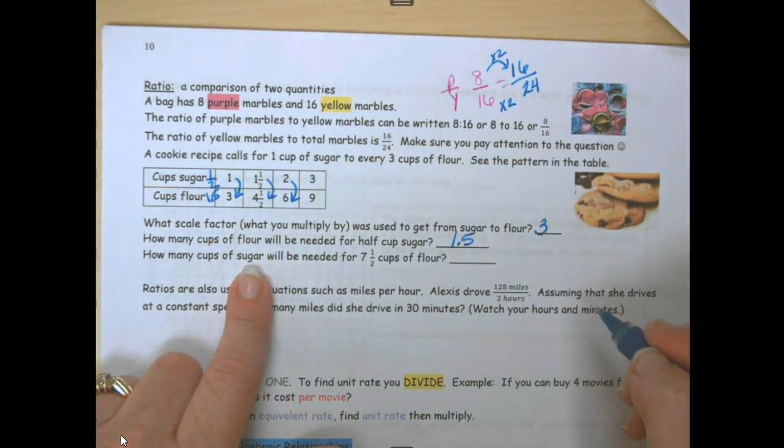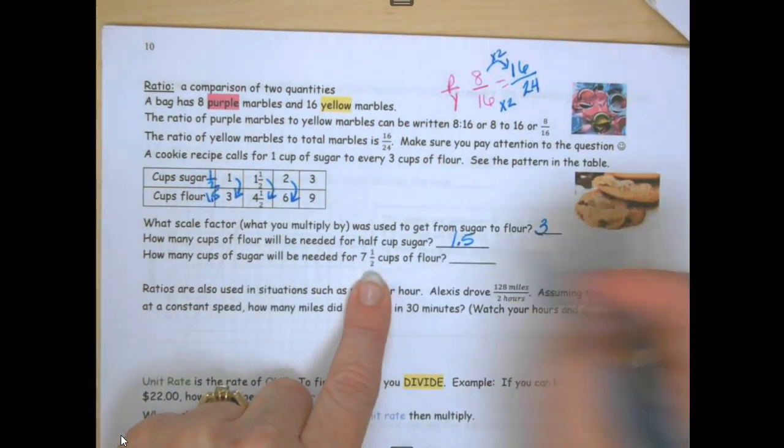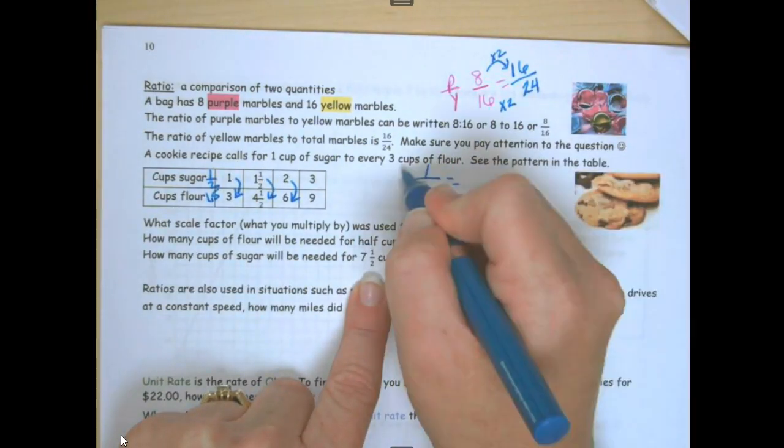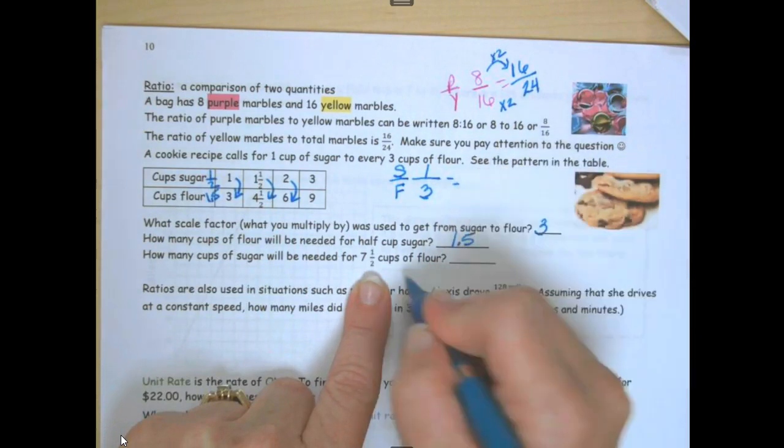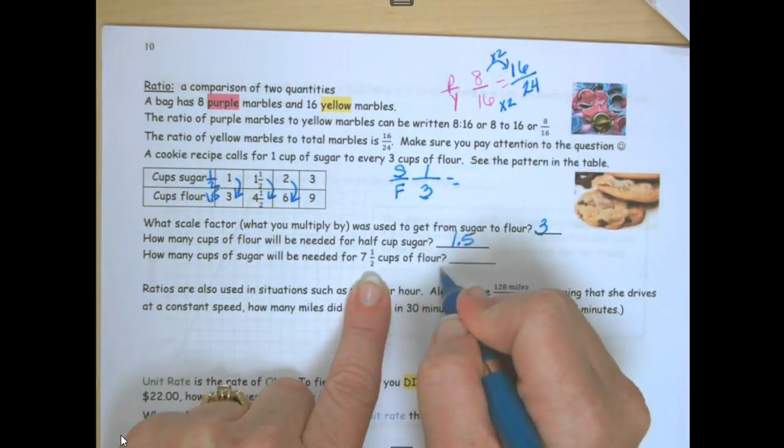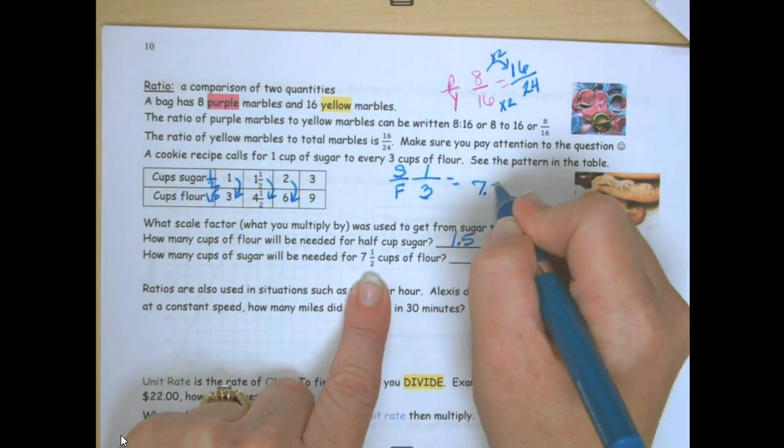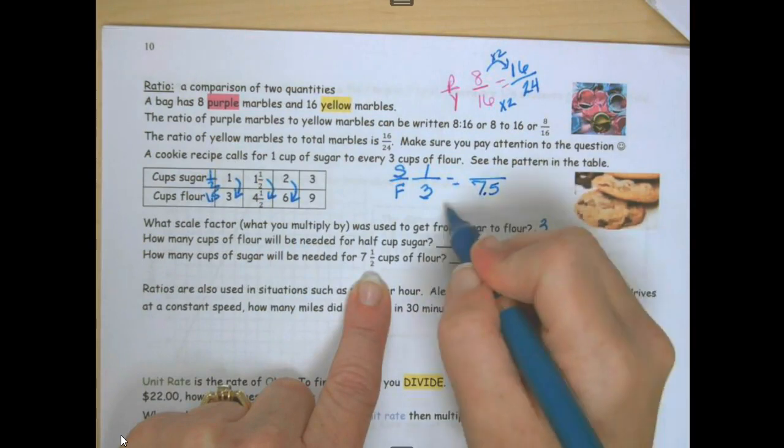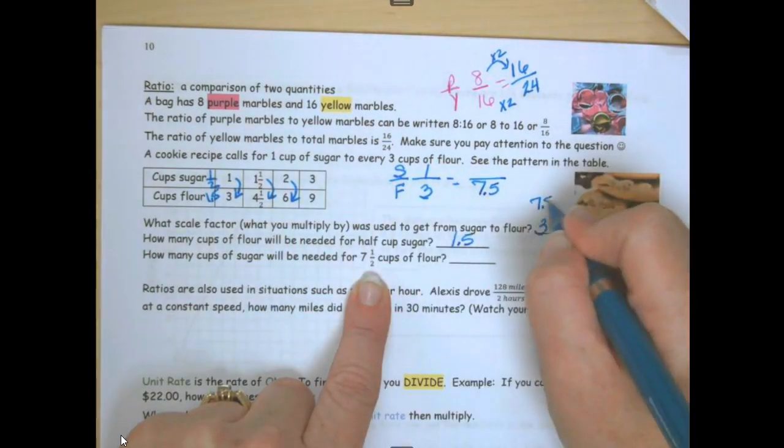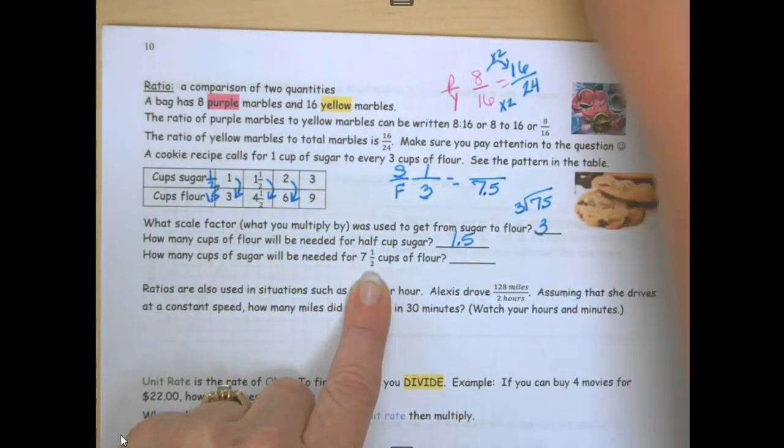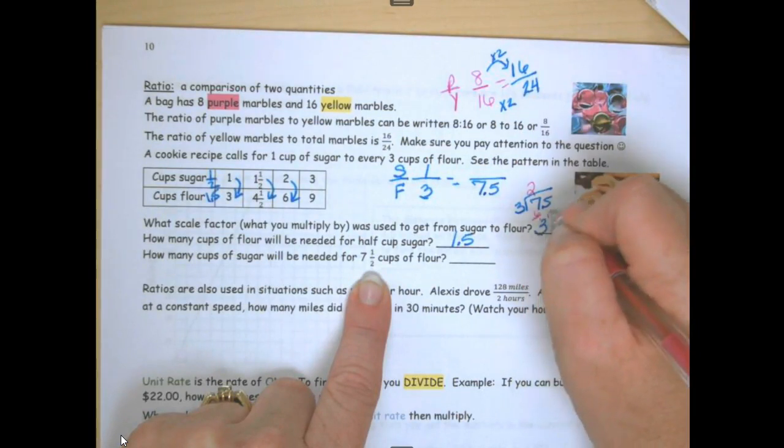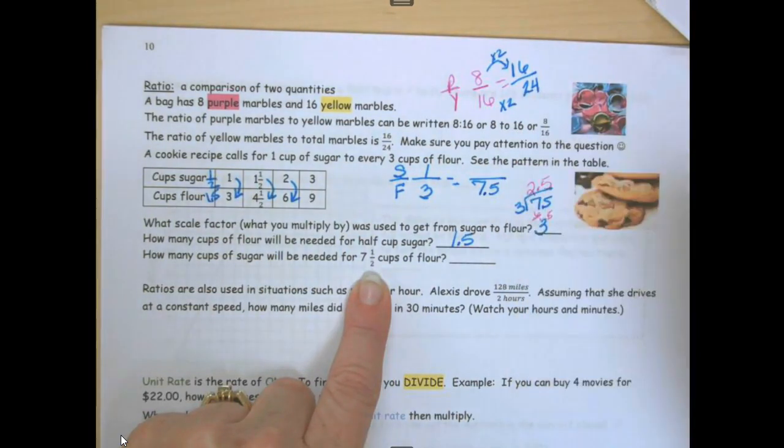How many cups of sugar will be needed for 7.5 cups of flour? So we're going to set this up as a ratio. 1 to 3. This is sugar to flour. And we want 7.5 cups of flour. So we're going to take 7.5 cups and divide by 3. And I get 2.5.